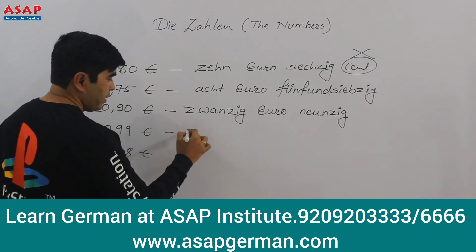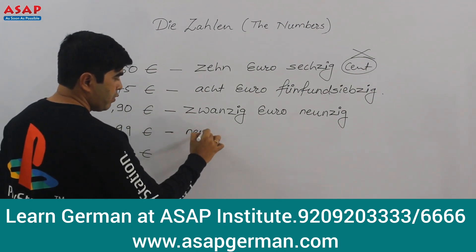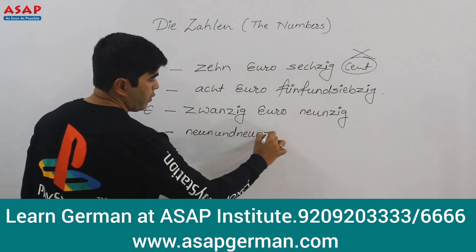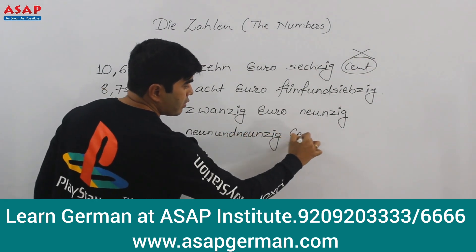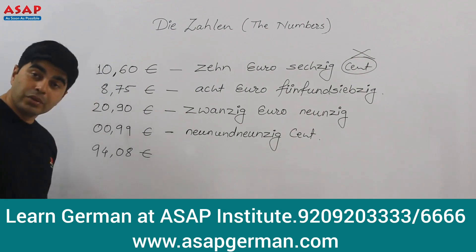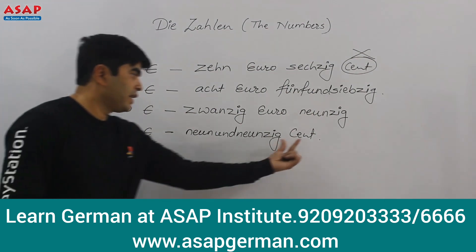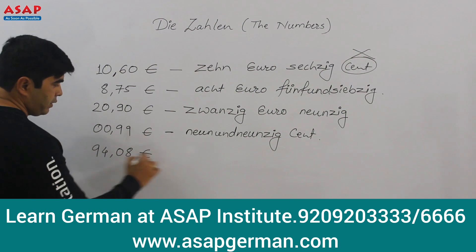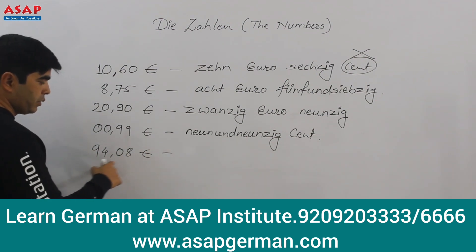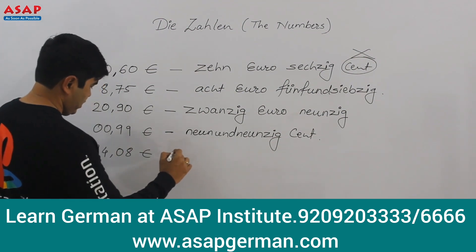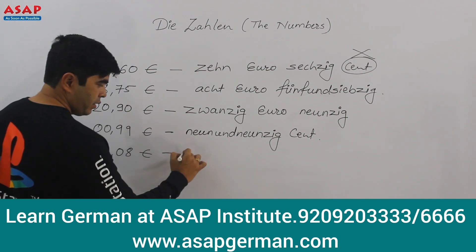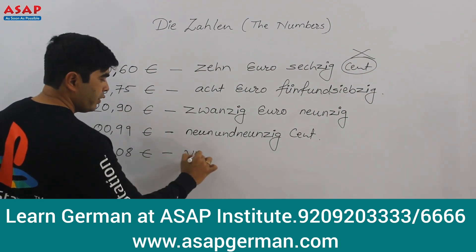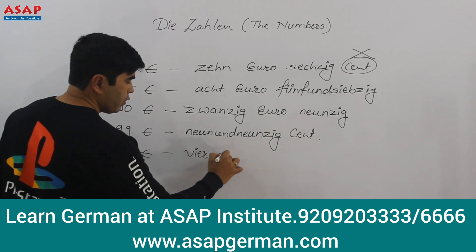Now here it is zero euros and 99 cents. How do they read it? It is neunundneunzig Cent. They do say 'Cent' here because there is no euro — not even a single euro. And here again: 94 euros and 8 cents — you say vierundneunzig Euro acht Cent.